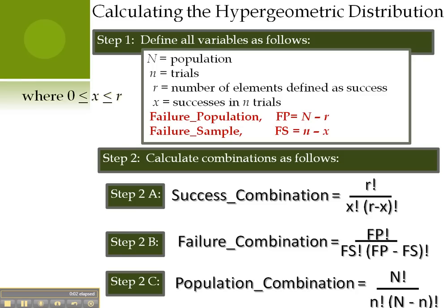When we ended part one of the video, we had reviewed step one and step two. So we see now, to calculate a hypergeometric distribution, we first define the variables.